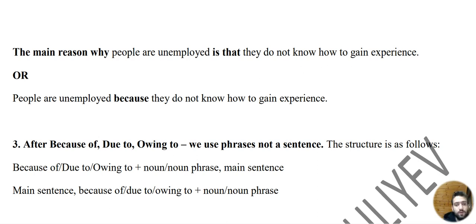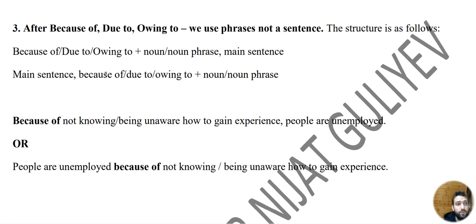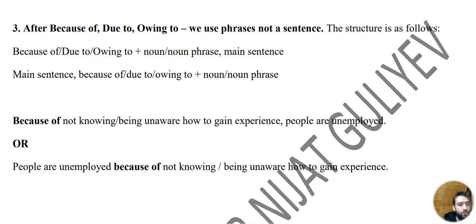For the third sentence type, remember this rule: after BECAUSE OF, DUE TO, and OWING TO we use phrases, NOT a full sentence. For example: 'Because of not knowing / because of being unaware of how to gain experience, people are unemployed.' Or: 'People are unemployed because of not knowing / being unaware of how to gain experience.'